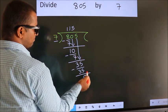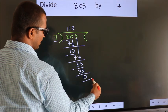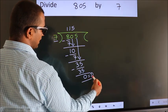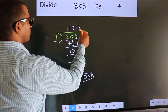No more numbers to bring it down. So we stop here. This is our remainder. This is our quotient.